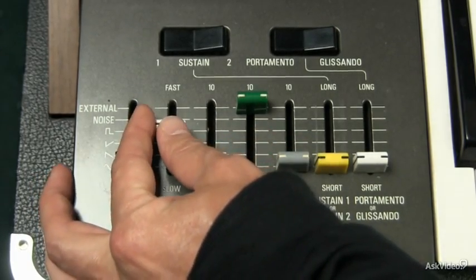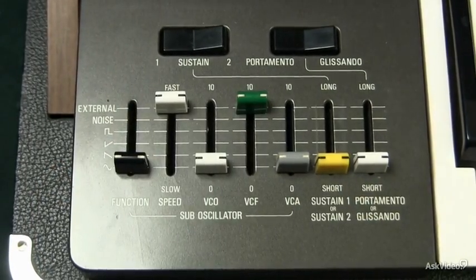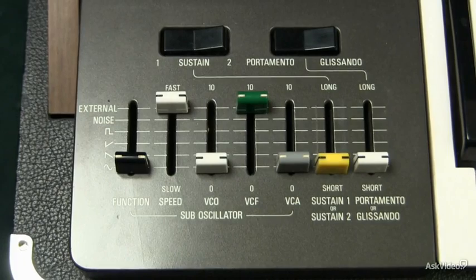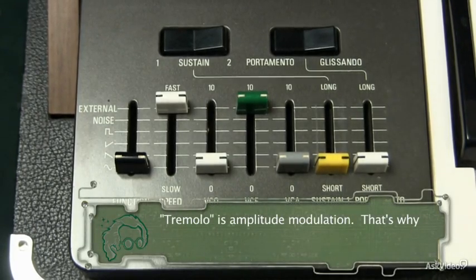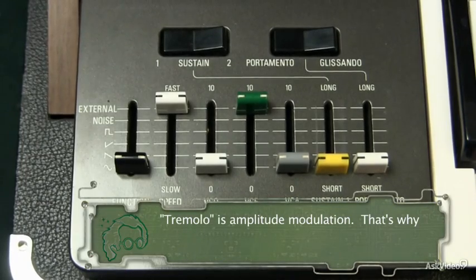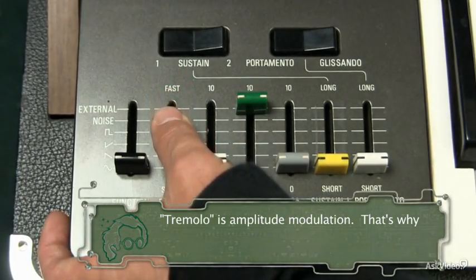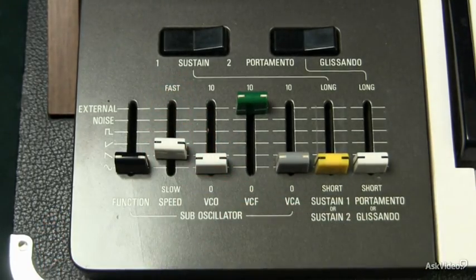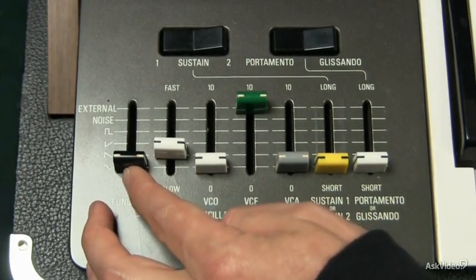And we can adjust the speed. Because the LFO on the CS50 goes into the audio range we can get this sort of distorted, extremely fast modulation. That is the sine wave. Let's have a listen to the saw wave.